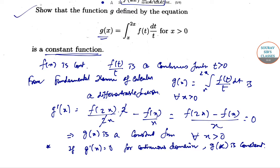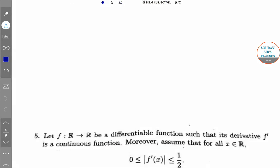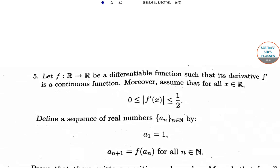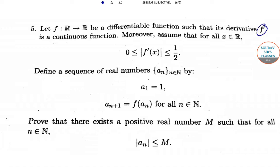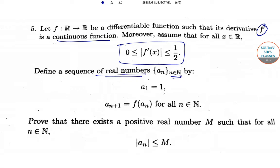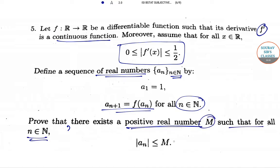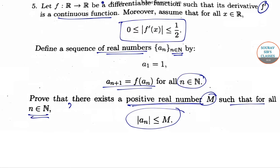Now we proceed to question number 5. Question number 5: f from ℝ to ℝ is a differentiable function such that the derivative f' is a continuous function. Moreover, assume that for all x in ℝ, 0 ≤ |f'(x)| < 1/2. Define a sequence of real numbers {aₙ} where a₁ = 1 and a_{n+1} = f(aₙ) for all n in ℕ. We need to prove that there exists a positive real number M such that |aₙ| ≤ M for all n in ℕ. This sequence is following a decreasing/bounded series.